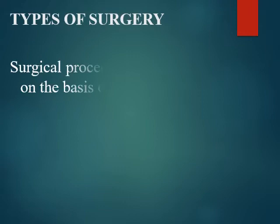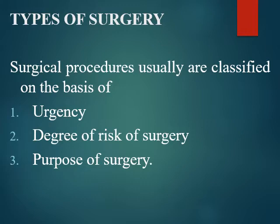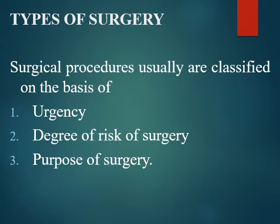Let's look at the types of surgery. Surgical procedures are classified into three categories: first, according to their urgency — how urgent is the operation; second, the degree of risk — how much is the patient at risk; and third, the purpose of surgery — why do we want to do this operation. These are the three categories we are going to look at.